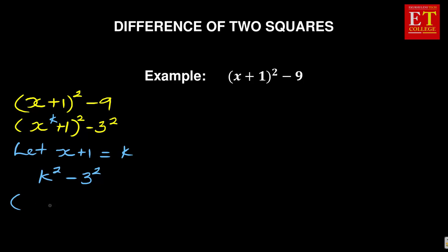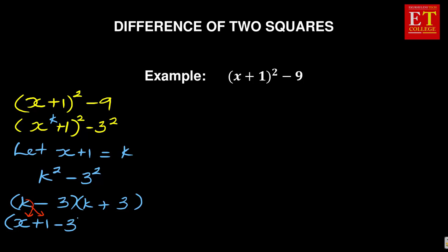Remember, k is x plus 1. So substitute back: where there is k, put x plus 1. The first bracket becomes (x plus 1 minus 3) and the second becomes (x plus 1 plus 3). Simplifying: x plus 1 minus 3 is x minus 2, and x plus 1 plus 3 is x plus 4. So the answer is (x minus 2)(x plus 4).